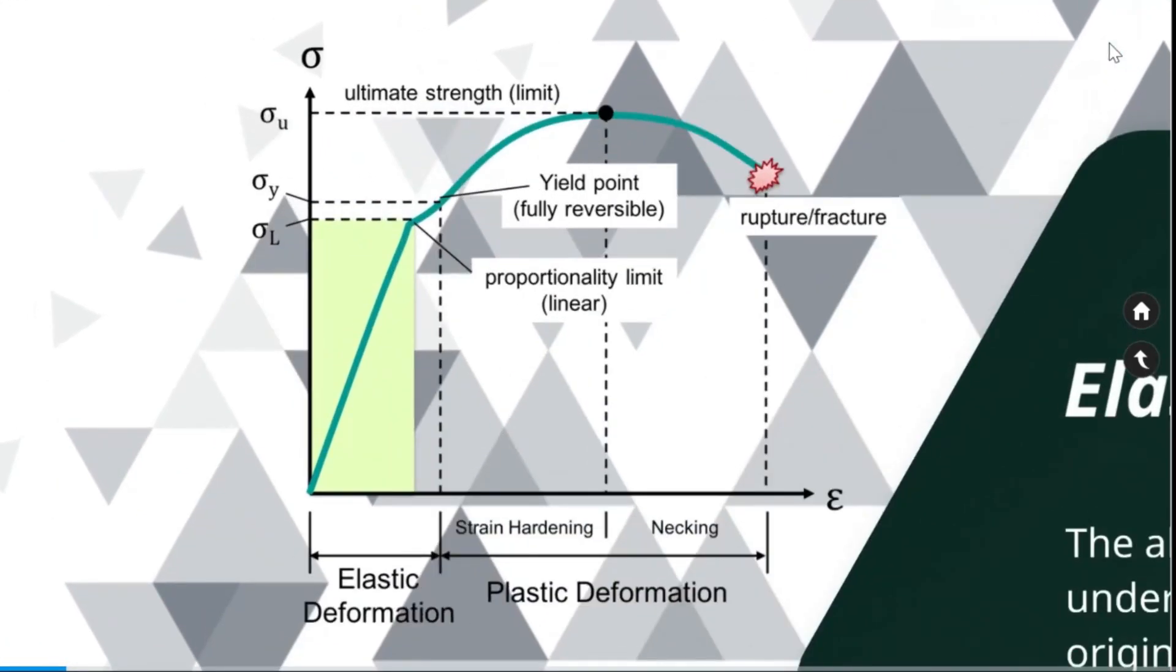In this stress-strain diagram, it is evident that stress is directly proportional to the strain up to a certain force acting on a material. So, this region is called elastic region.